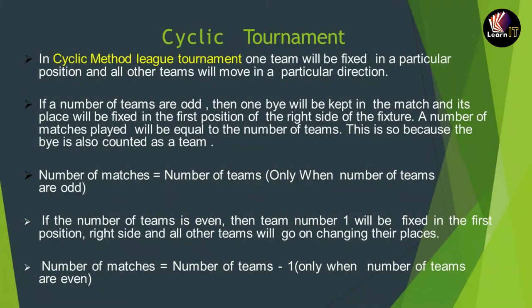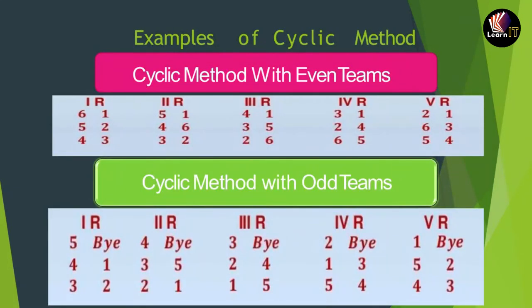Now let us move to the cyclic tournament. In the cyclic league method, one team is fixed in a particular position and all other teams move in a particular direction. If the number of teams is odd, a bye is placed in the match and fixed in the first position on the right side of the fixture. The number of matches played equals the number of teams when teams are odd. In case of an even number of teams, number of matches equals number of teams minus 1. In the cyclic method, if teams are even, Team 1 is fixed at the top right and other teams are arranged in ascending order consecutively downward and then upward on the left side, rotating clockwise. If teams are odd, the bye is fixed at the top right and the rest of the procedure remains the same.